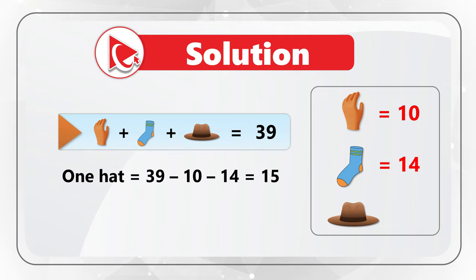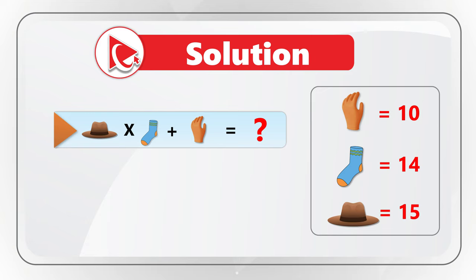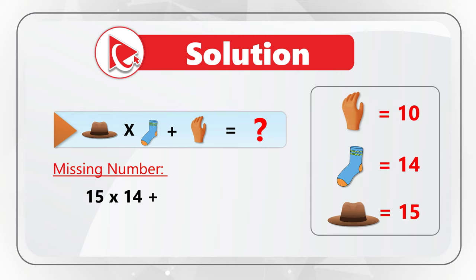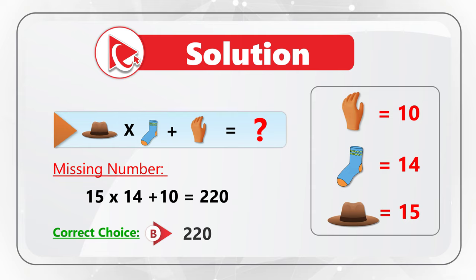Now we are ready to calculate the missing number. To do that, we need to multiply 15 by 14, which equals 210, and add 10. This is the value of hat multiplied by sock plus the value of glove. So the correct answer here is choice B, 220. Do you have a better way to solve it? Please make sure to show your observations and suggestions in comments.